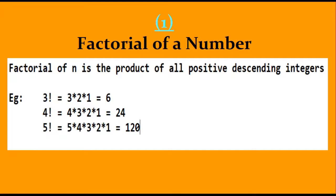The first question is the factorial of a number. This is one of the basic and important programs that every beginner should learn. Factorial of n is the product of all positive descending integers. For example, factorial of 3 is 3 × 2 × 1 = 6. Similarly, factorial of 4 is 4 × 3 × 2 × 1 = 24, and factorial of 5 is 120.